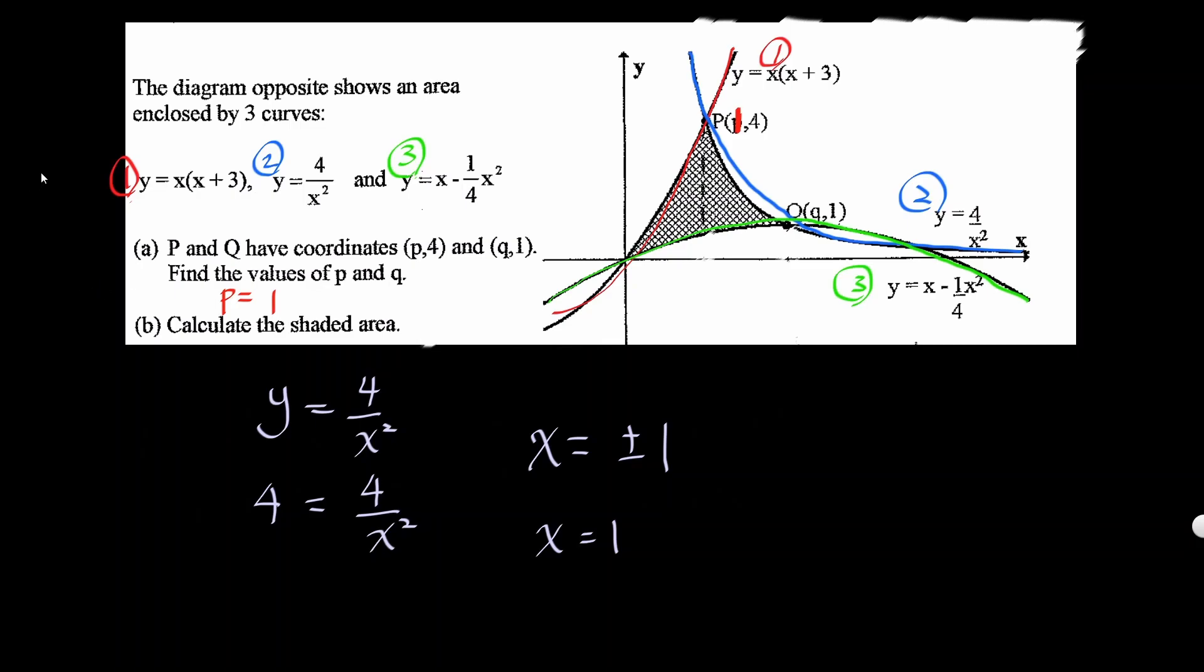We do the same thing with q. q is a point of intersection of graphs 2 and 3. So let's just pick an easy equation to work with. Again, I'm going to use equation number two. So y is equal to 4 over x squared. In this case, y is 1, so I'm going to let 1 equal 4 over x squared. That means x squared must be equal to 4. x is either plus or minus 2. Since it's right, x is 2. So we know that q is 2, 1 now. So little q is going to be 2.